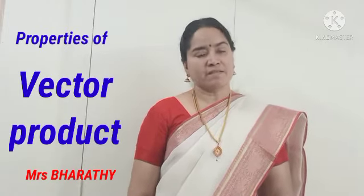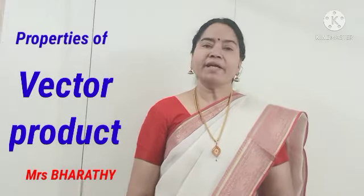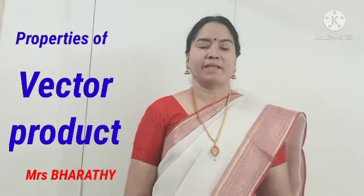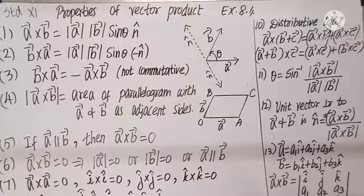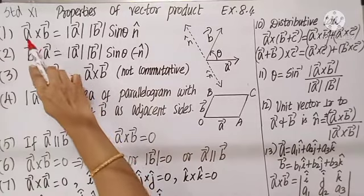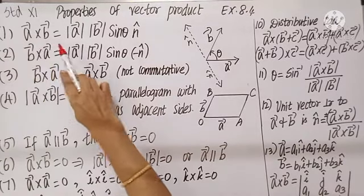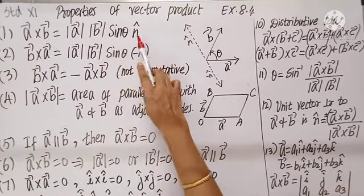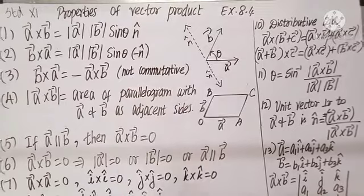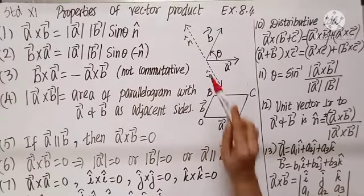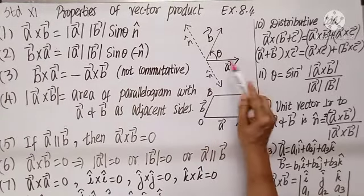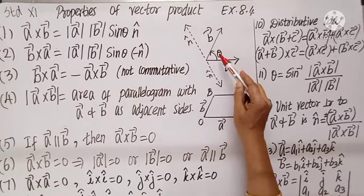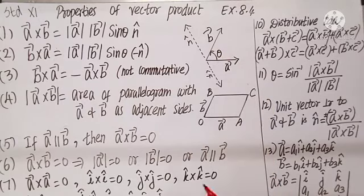First, let us see the various properties of cross product to apply in the problems. As we recall, the definition for A cross B is mod A, mod B, sine theta, n-cap. As we see here, vector A and vector B form an angle theta from A to B.